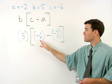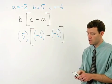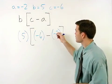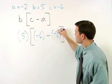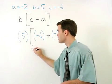So the first thing we do here is simplify negative 6 minus a negative 2, which can be thought of as negative 6 plus positive 2. And that simplifies to negative 4.